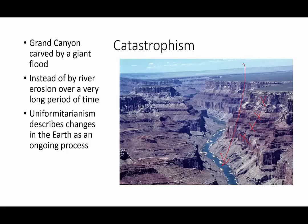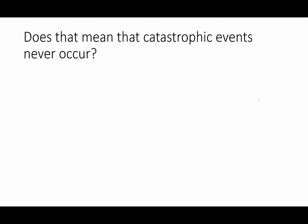So uniformitarianism describes changes in the Earth as an ongoing process, not a single catastrophe. Does that mean that catastrophic events never occurred? Well, of course not. Ask a dinosaur.